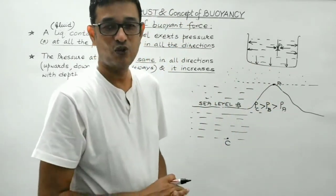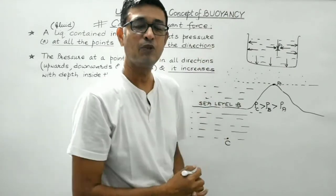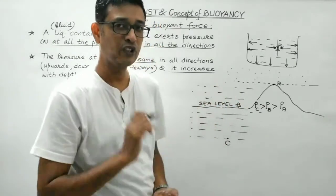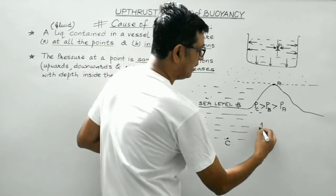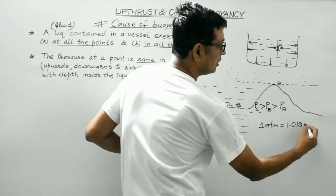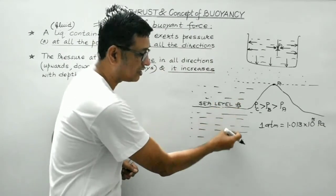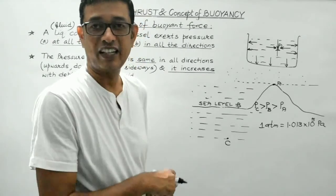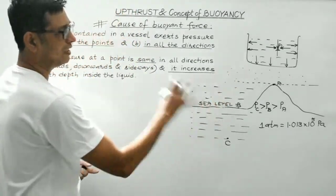As depth increases inside the liquid, atmospheric pressure remains constant but the pressure exerted by the liquid keeps increasing because the weight of the liquid column increases with depth. So pressure at point C is greater than at point A. As we gain altitude, atmospheric pressure decreases. At sea level it is 1.013 × 10⁵ Pascal, which is 1 atmospheric pressure. As we go deeper inside the sea, pressure increases.